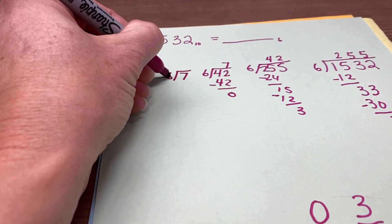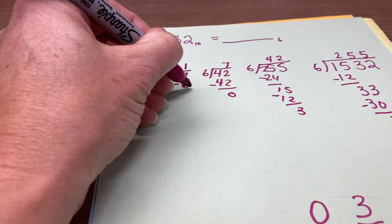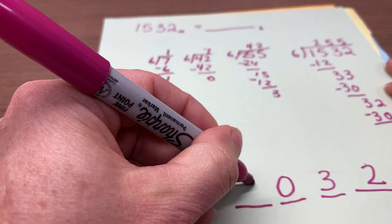The 7 divided by 6, goes in once, remainder 1. That goes in this place value.